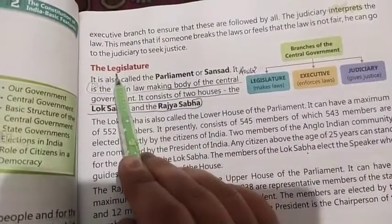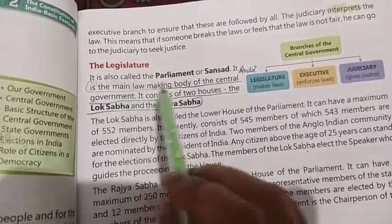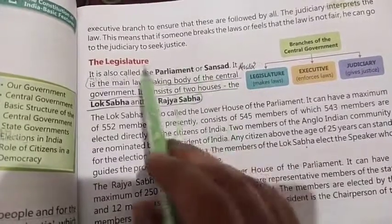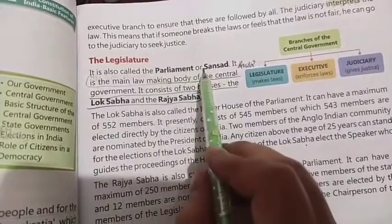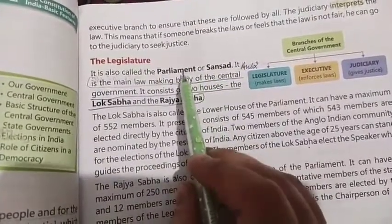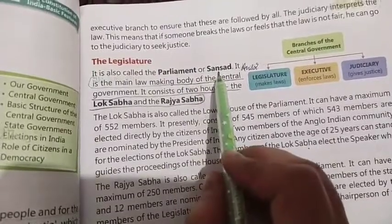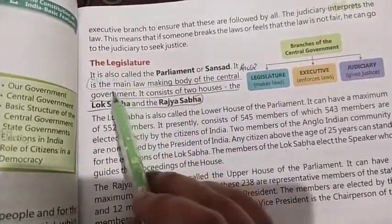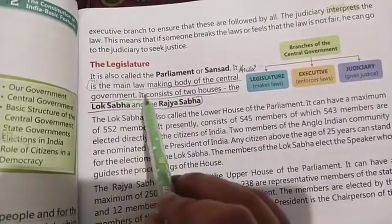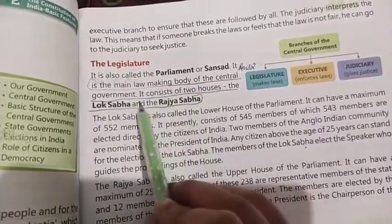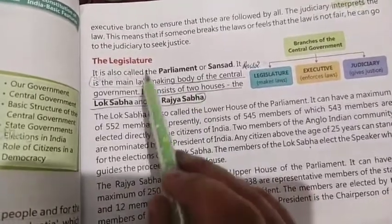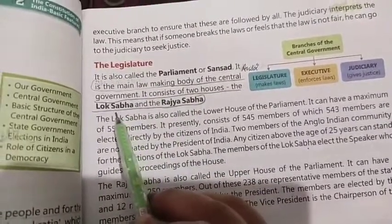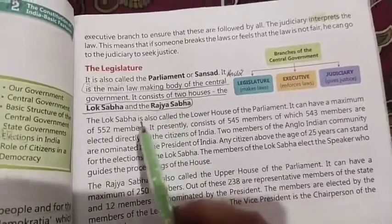The first branch is the legislature, which is called Parliament or Sansad. It is the main lawmaking body of the central government, and it consists of two houses: Lok Sabha and Rajya Sabha.